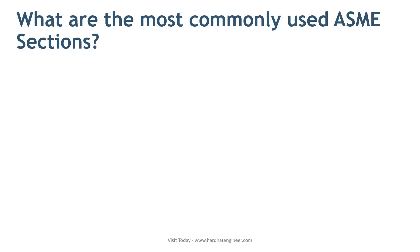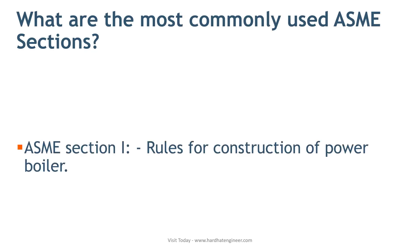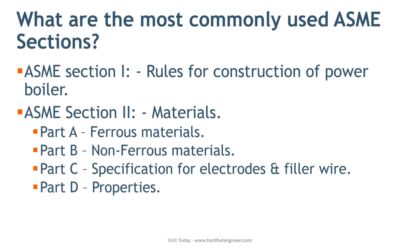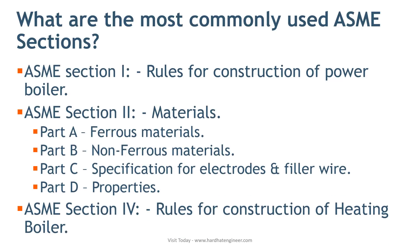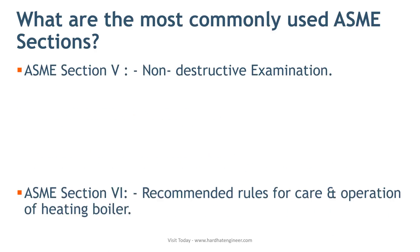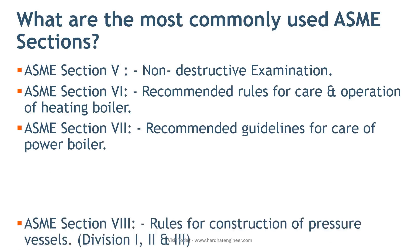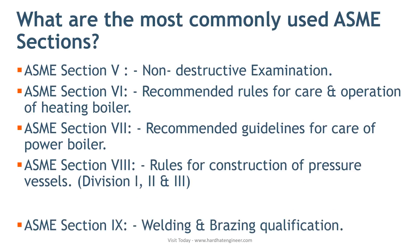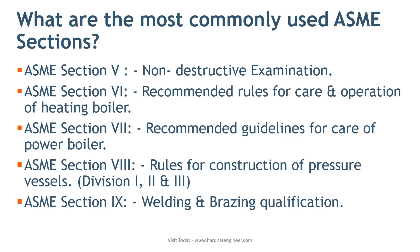Let's move to the next question: what are the most commonly used ASME sections? Out of the full list, ASME Section 2, Section 5, Section 8, and Section 9 are most commonly used in the oil and gas industries.